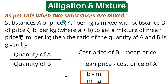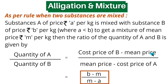As per the rule of allegation, when two substances are mixed — substance A of price rupees A per kg is mixed with substance B of price rupees B per kg, where A is less than B — to get a mixture of mean price rupees M per kg, then the ratio of quantity of A to quantity of B is given by: quantity of A upon quantity of B equals cost price of B minus mean price, upon mean price minus cost price of A. This equals B minus M upon M minus A.